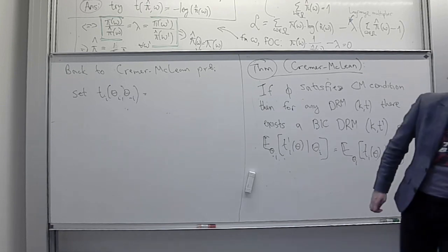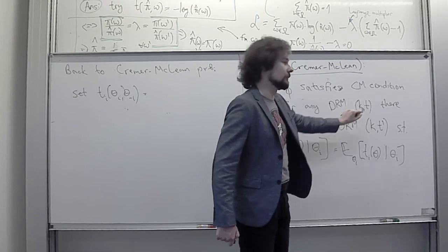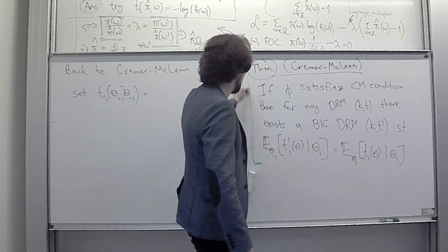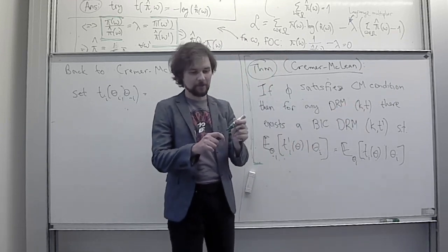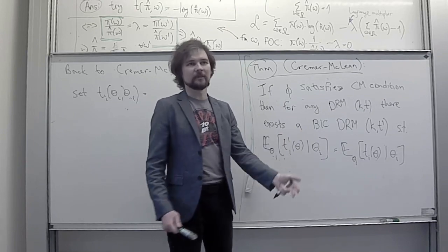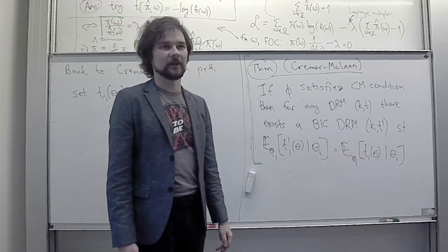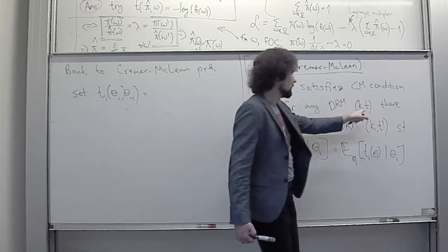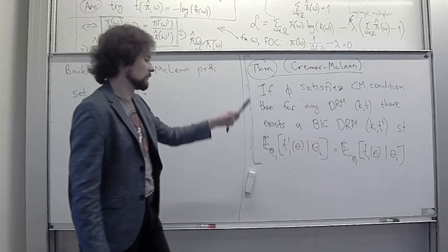Specifically, the expectation over theta_{-i} of t_i'(theta | theta_i) equals that of the original t_i. So we can implement any allocation rule K — not only that, we can also pair K with any profile of expected transfers for every player. This means we get interim individual rationality for free, or we can extract a lot of money from every player if there is no IR constraint. Any profile of expected transfers is implementable in combination with any K.